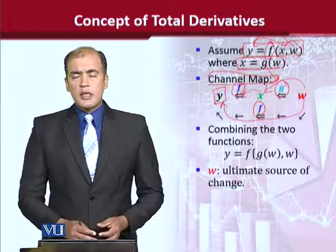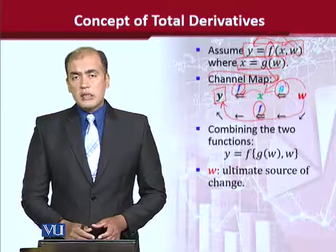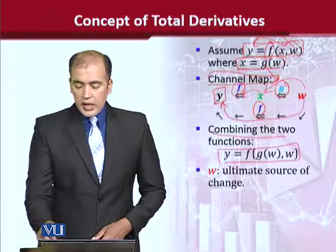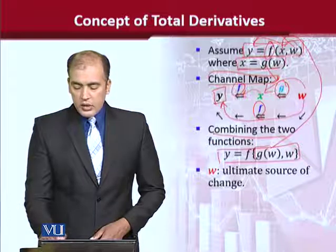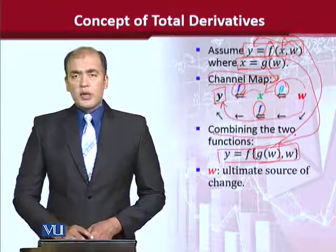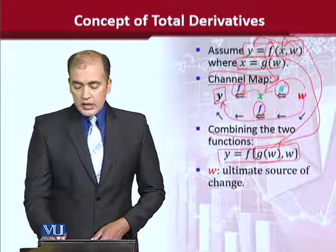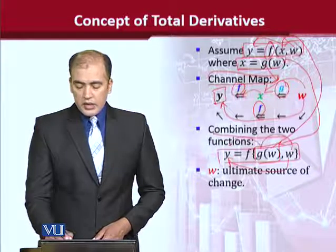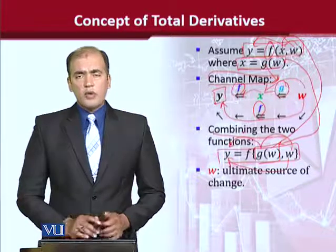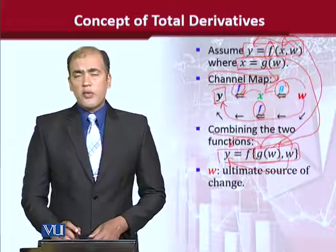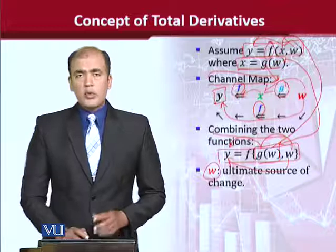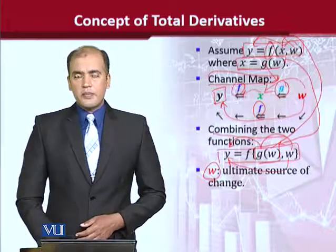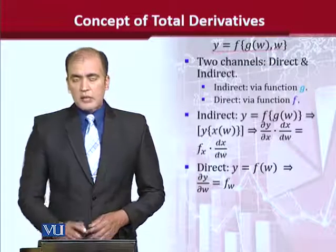It is slightly complicated to model the impact. These are the two functions we are talking about. We have x here, which is one function of y. This is the functional form, and y has two components.